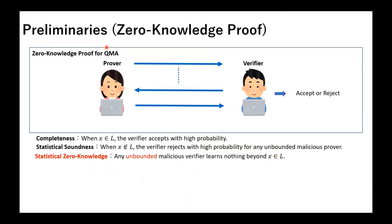One way to resolve the problem is to use a protocol with statistical zero-knowledge. In statistical zero-knowledge, the security holds against an unbounded malicious verifier, so the security will never break in the future. However, it is believed that we cannot construct a protocol with statistical soundness and statistical zero-knowledge at the same time. So, if the protocol satisfies statistical soundness, the zero-knowledge property must be a computational one.